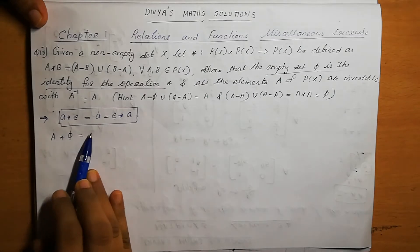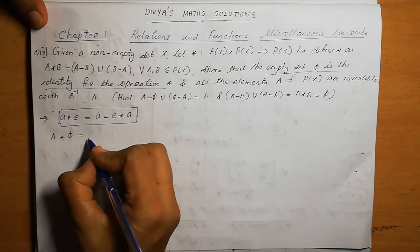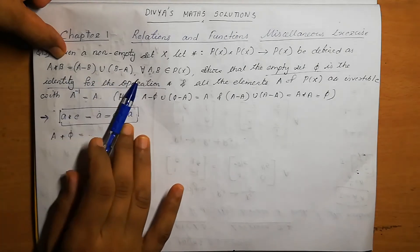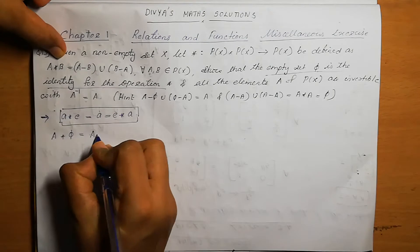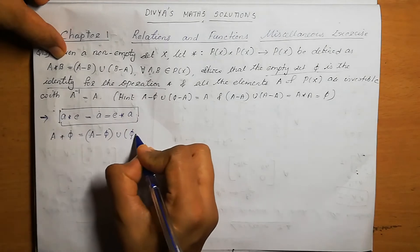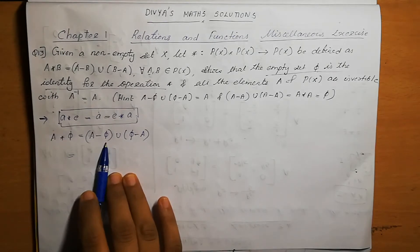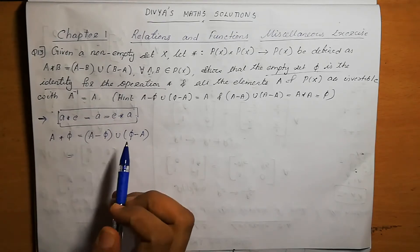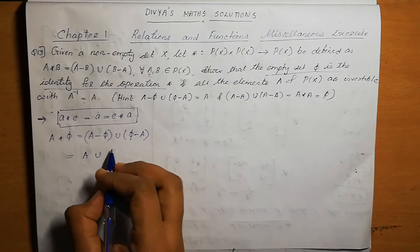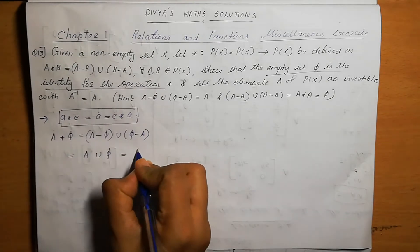First we prove A star φ equals A. A star φ means A minus φ union φ minus A. Using the definition A star B equals A minus B union B minus A. So A minus φ is A, and φ minus A is null set. A union null set equals A. So we get A.